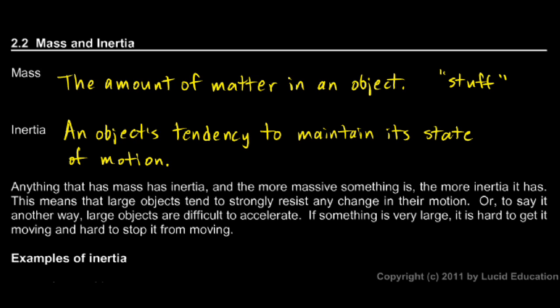Now, mass and inertia are not exactly the same thing, but they're very closely related. Anything that has mass has inertia, and things that are really big have a lot of inertia. And that means that large objects tend to strongly resist any change in their motion. Or to say it another way, large objects are difficult to accelerate. If something is large, it's hard to get it moving and it's hard to stop it from moving.